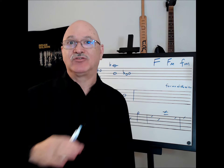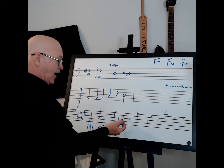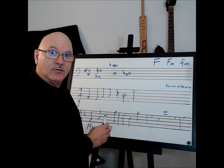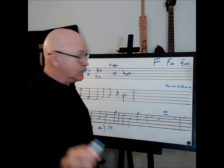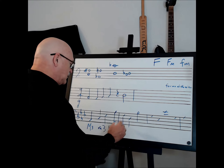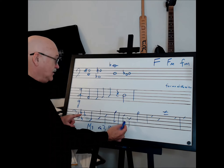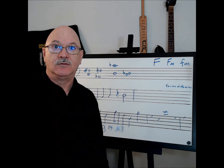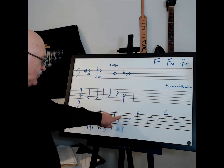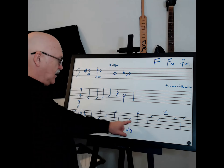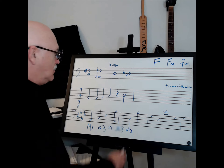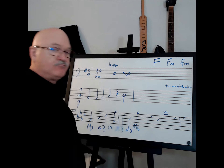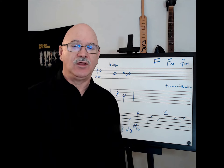F to A-flat: the key of F has one flat — B-flat. F to A is a major third; F to A-flat makes it a minor third — lowercase m with a dash, then 3. D-flat to F: in the key of D-flat — B-flat, E-flat, A-flat, D-flat, G-flat — F is just F, so D-flat to F is a major third. D-flat to B-flat: B-flat is in that scale, so counting up — one, two, three, four, five, six — this is a major sixth. You've got to know your key signature scales.